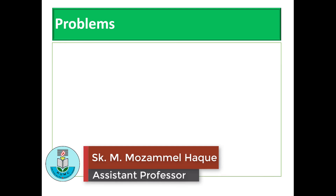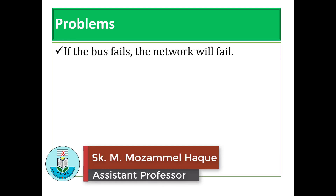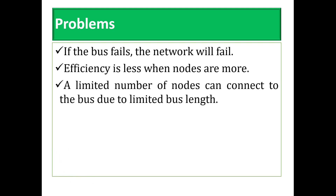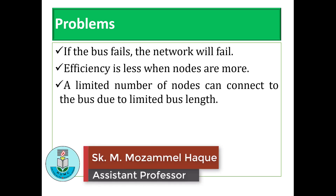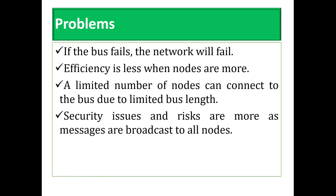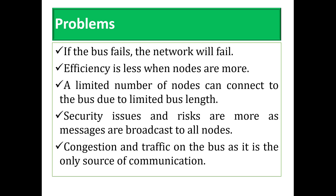Now let's see some problems with this topology. If the bus fails, the entire network will fail. Efficiency decreases when there are more nodes. A limited number of nodes can connect to the bus due to limited bus length. Security issues and risks are greater as messages are broadcast to all nodes. There is also congestion and traffic on the bus as it is the only source of communication.